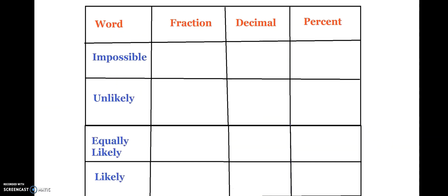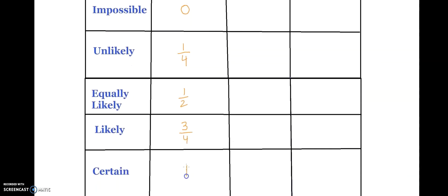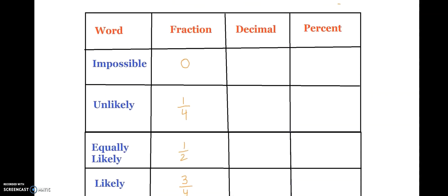Now I'm going to show you the probability in this table. We talked about fractions on the number line. The first one is 0, which is impossible. The second one is 1 over 4, which is unlikely. Then equally likely is 1 over 2. Likely is 3 over 4. And certain is 1. In decimal, the first one is always 0 because it's impossible — so I write 0, and 0%.